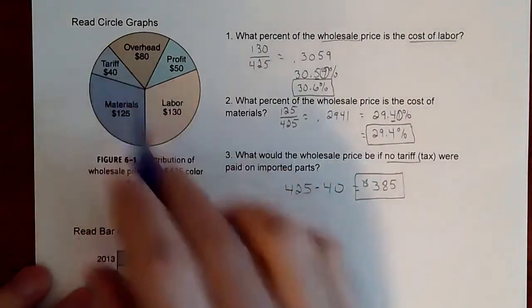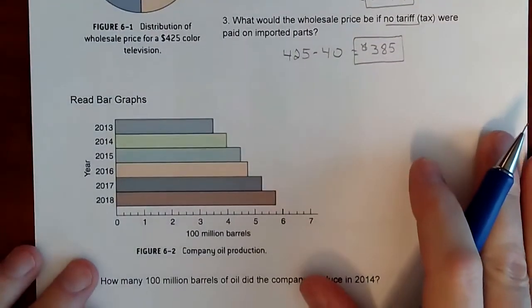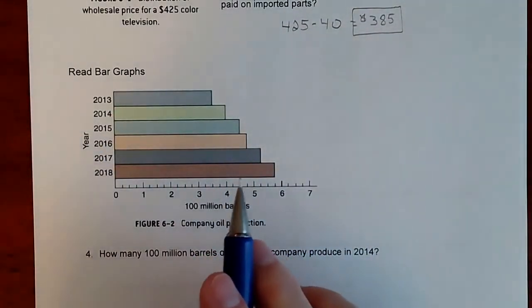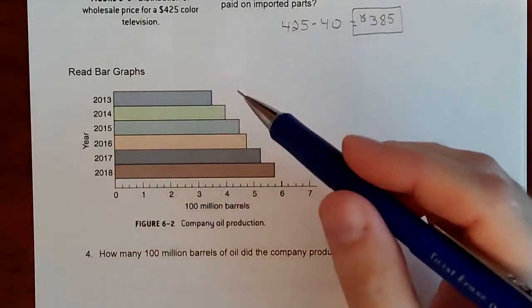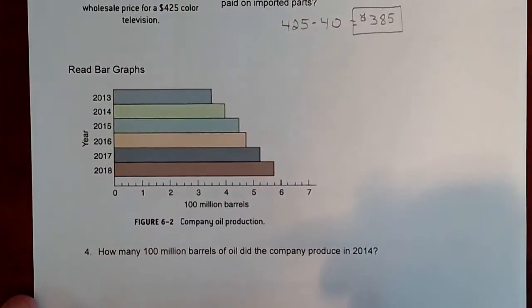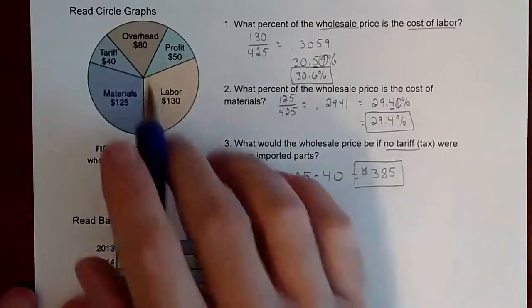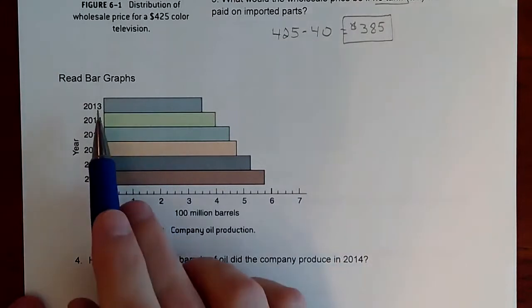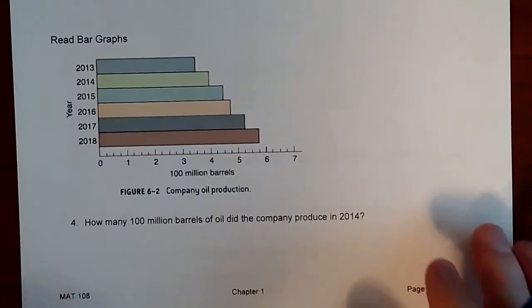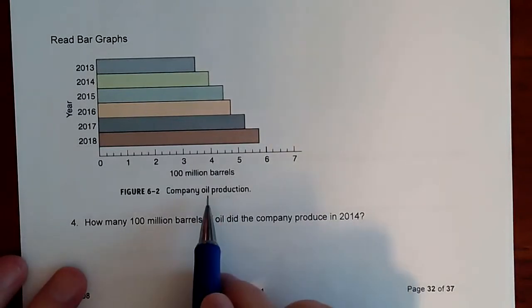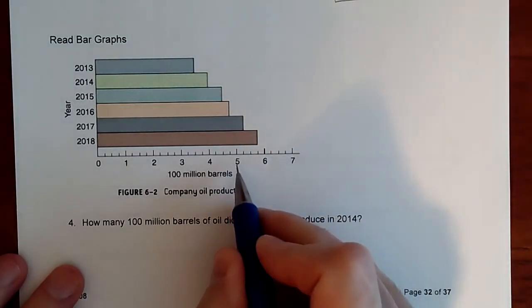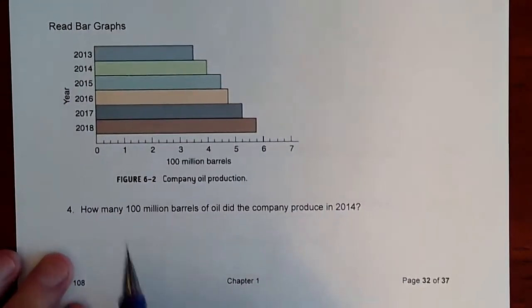Pie charts are always something out of something — pretty straightforward. Now looking at a bar graph. Bar graphs are different from pie charts; they're not pieces of one thing but rather information over time. For ours, a company is producing oil and the bar graph represents units of 100 million barrels. So if you're at five, that represents 500 million barrels, and these are the years associated with it.